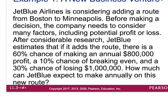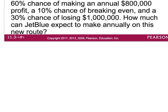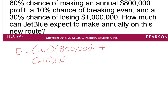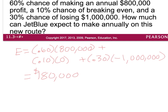There are three scenarios: they're either going to make $800,000, break even, or lose $1 million. The expected value takes the probability of each event times the amount of each event. So there's a 0.60 chance they make $800,000, plus a 10% chance of breaking even, plus a 30% chance that they lose $1 million — and when you lose, you treat that as a negative number. Multiplying and adding all three together, JetBlue can expect to make $180,000, so it may be worth the risk for them.